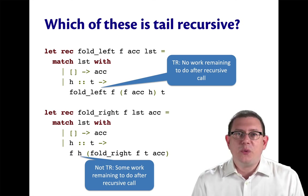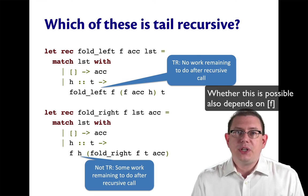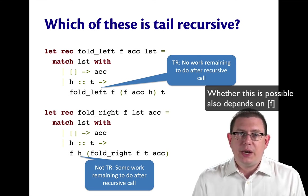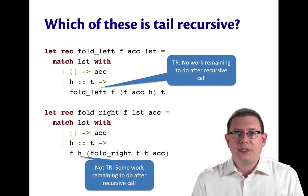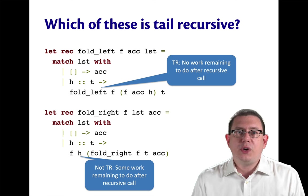What if you wanted a tail recursive fold from the right? You can generally get that by reversing the list first, then doing a fold from the left. Yes, that does require traversing the list an extra time, but that generally doesn't increase the asymptotic complexity of the algorithm, and it does give you an implementation that's not going to overflow the stack.